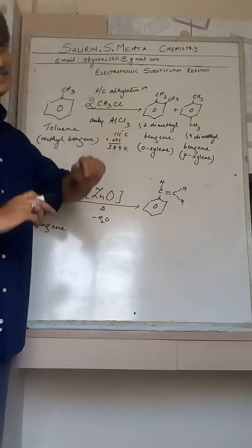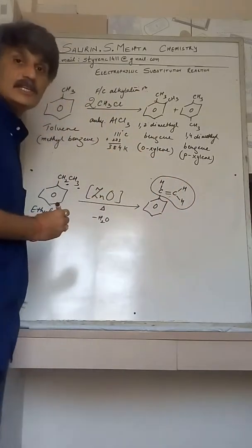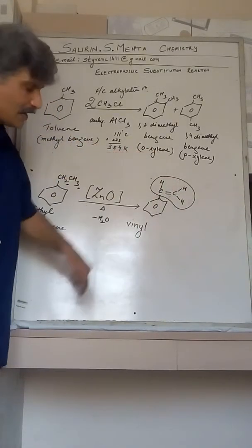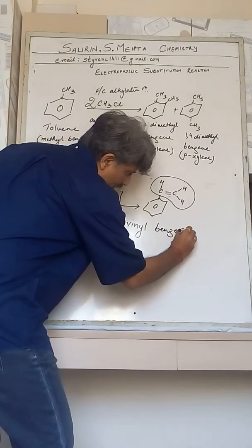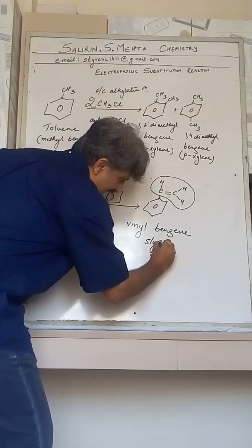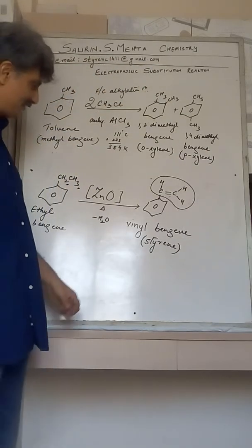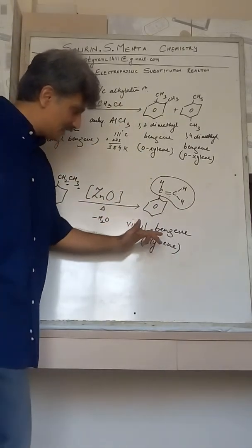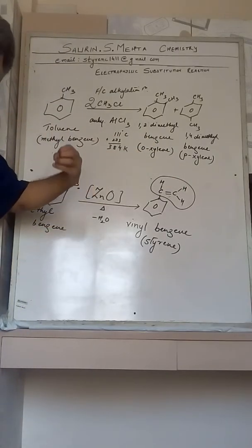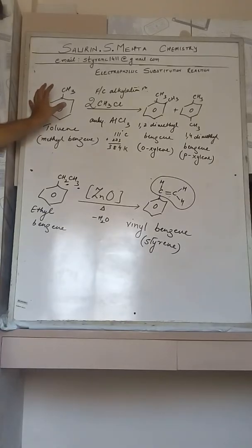One H and one H got eliminated from ethyl benzene, leaving one H on the first carbon and two H atoms on the second carbon. One electron from each carbon combines to form a double bond — unsaturation takes place. On benzene you now have the group CH=CH₂, which is known as the vinyl group. That group bonded to benzene gives the compound vinyl benzene, whose common name is styrene.